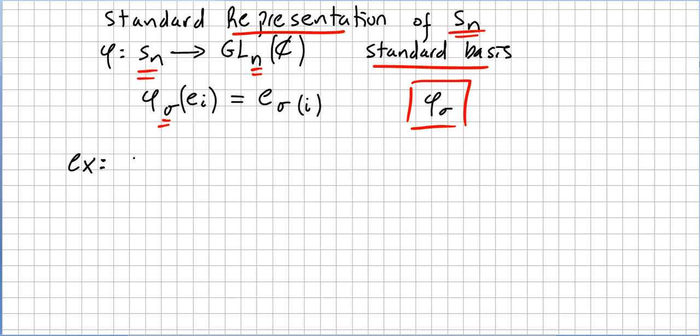Let's say our group G is S3. So for S3, the vector space is going to be complex 3.